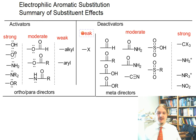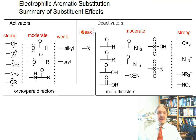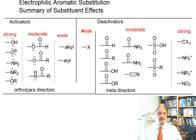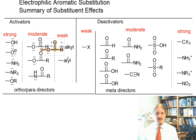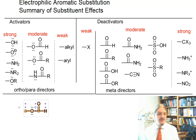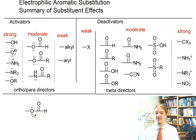The moderate activators are those things that have lone pairs that can donate to the ring, but have something else competing for that attention. For example, in an ester, the lone pair on one oxygen could be donated into the aromatic ring, but there's also a resonance structure where it donates those electrons to the carbonyl group.